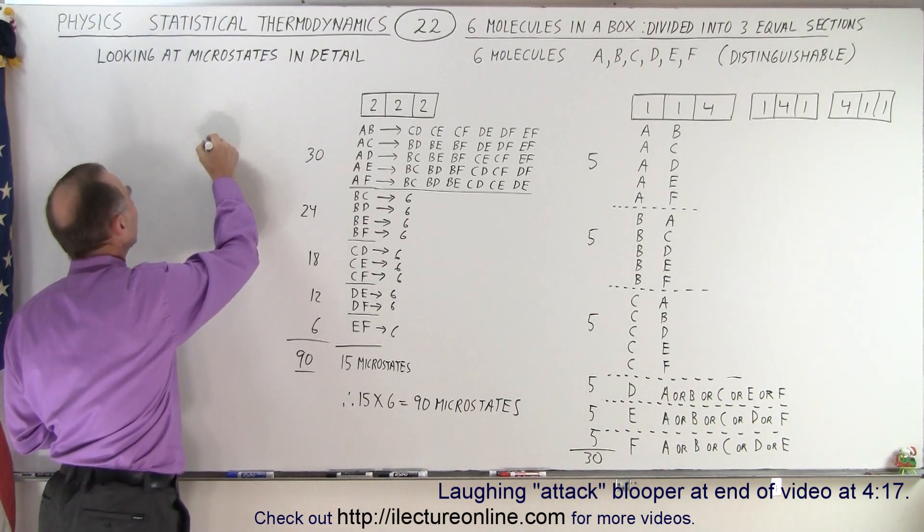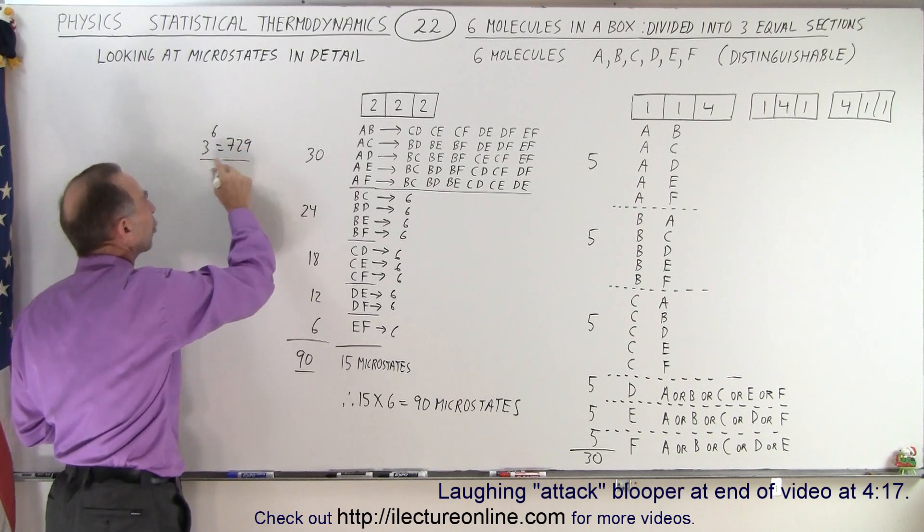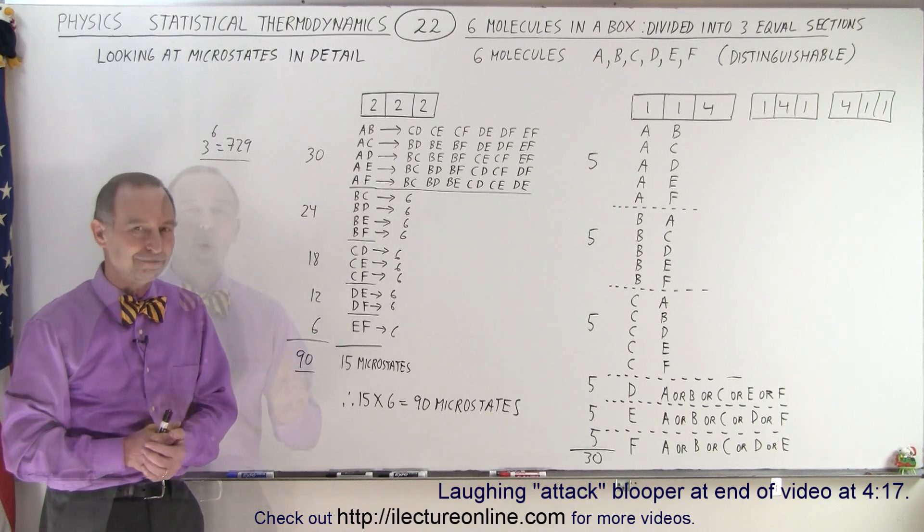Again, that's obtained by taking three to the sixth power, which is indeed seven hundred and twenty-nine total microstates in all the various cases. And that is how it's done.